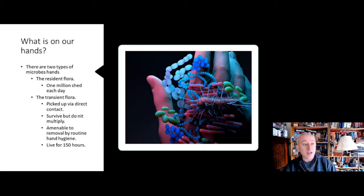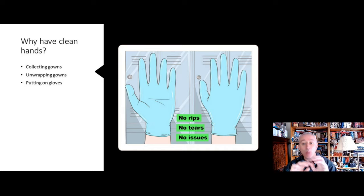Why have clean hands? We need to have clean hands when we're going into clean rooms, when we pick up our gowns, when we're unwrapping our gowns, and when we're gowning and putting on our gloves. Then for every critical application within the clean room, we should sanitize our hands routinely every five minutes if we've done nothing, and then every time we've touched a surface we should be sanitizing our hands.